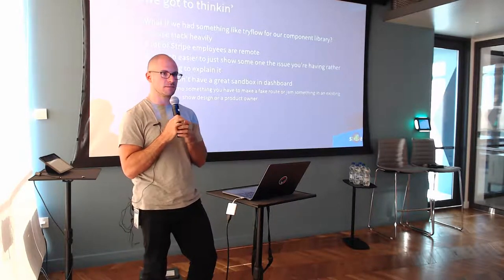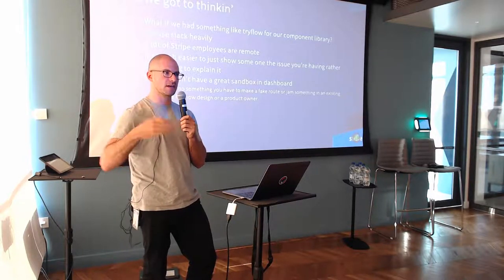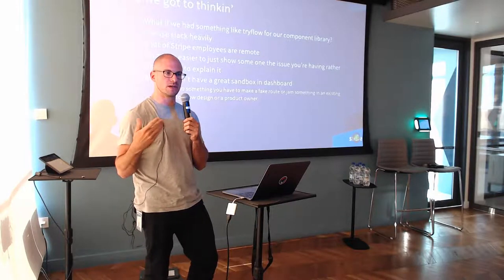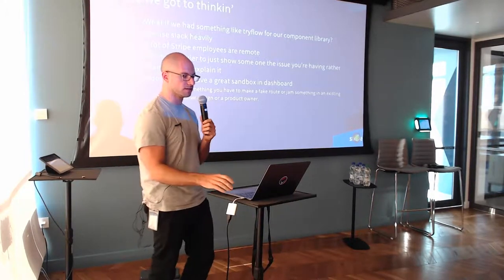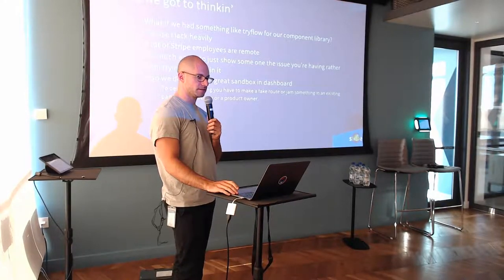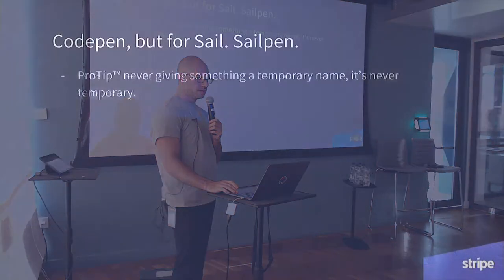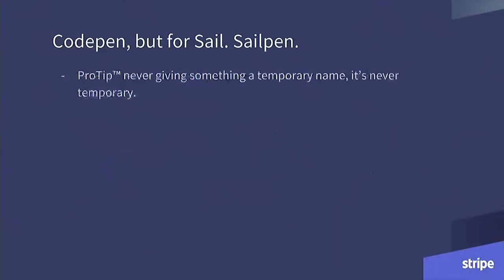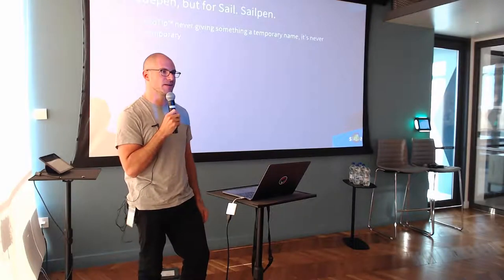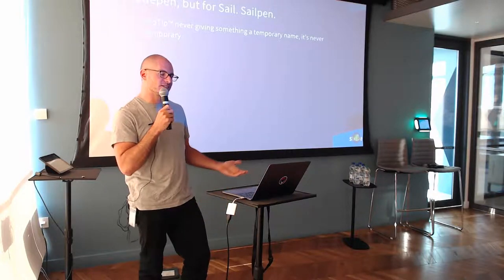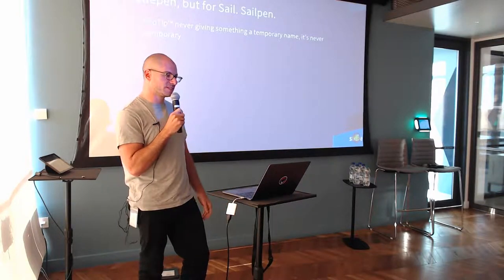It's a bit hard to share what your current state is, or to prototype. We don't have an easy way of sandboxing at Stripe. If you want to create a new page and explain to someone what you're doing, you can find an existing page and start hacking elements in, or add a dummy route to our main React Router route configs. But it's a bit painful — sometimes you just want to get up and running quickly to get a feel of what it's going to look like.